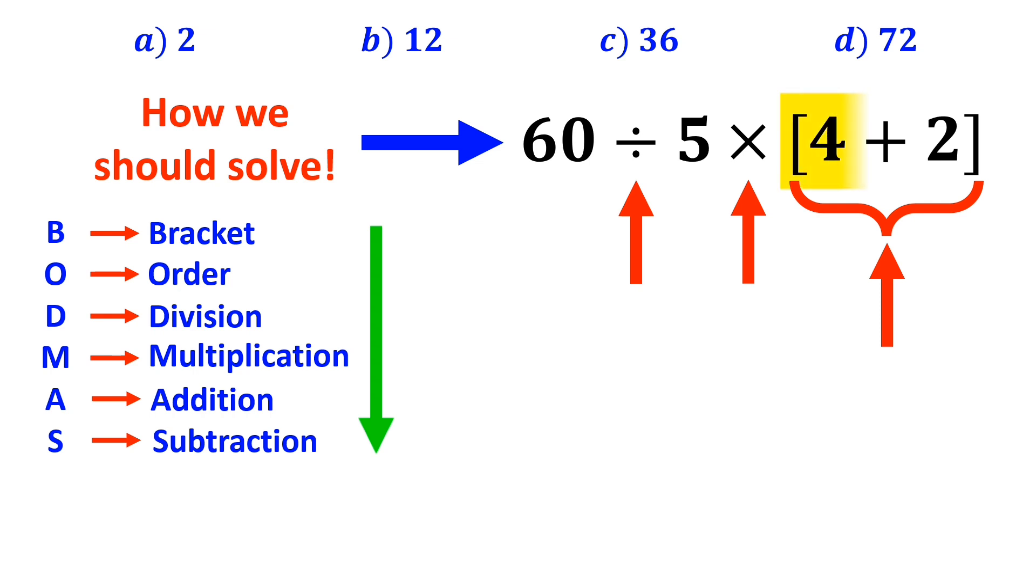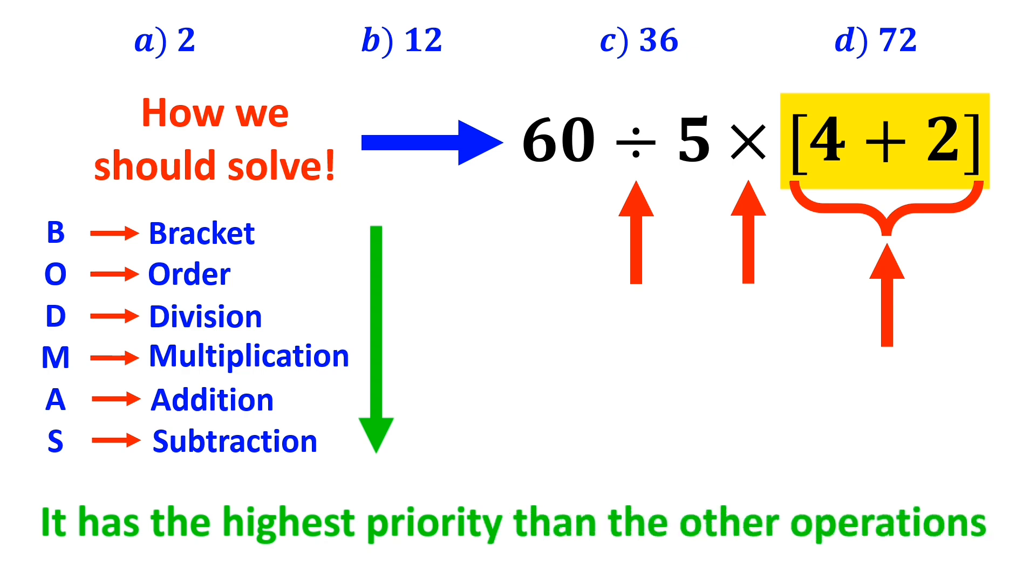So, we'll start with the bracket first, because it has the highest priority than the other operations. Okay, this expression simplifies to 60 divided by 5 times 6.